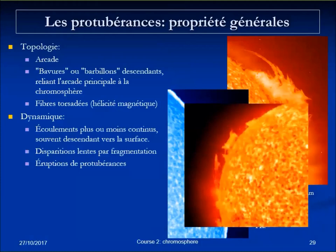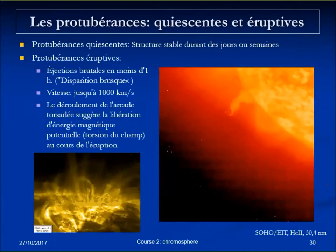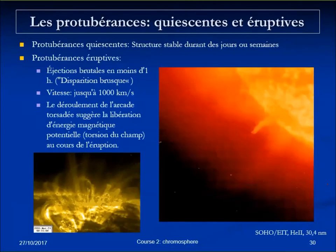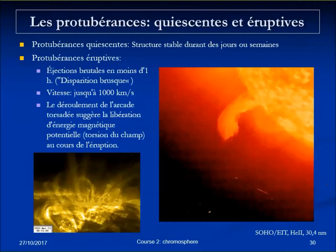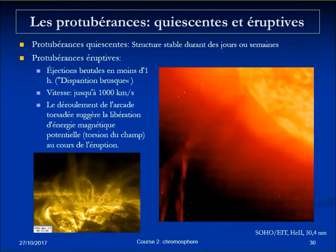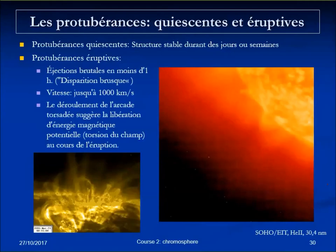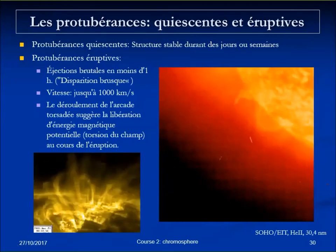There are two kinds of prominences: quiescent ones that can be stable during days or even weeks with just some flows but no major change, and eruptive ones where in less than an hour you can have ejection of a filament. The escaping prominence is often clearly twisted, showing that the structure has helicity, which is actually a driver of such events.